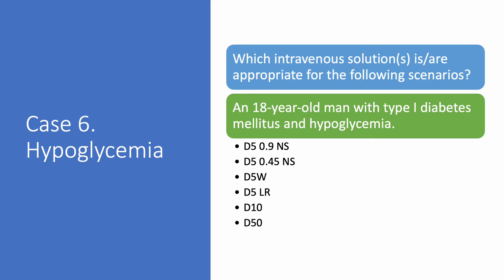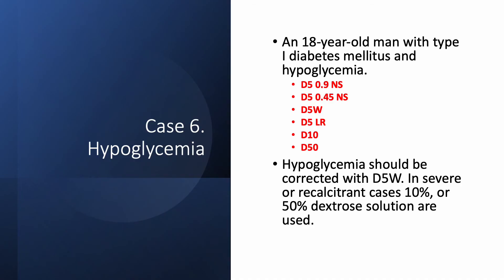Case number six: an 18-year-old man with type 1 diabetes mellitus and hypoglycemia. You can use any solution that has dextrose: D5/0.9% saline, D5 half normal saline, D5W, D5LR, D10, or D50. Most of the time you will use D5W, and if the hypoglycemia is severe you will use D10 or even D50. Use D5/0.9% saline if the patient is hyponatremic. If the patient is hypotensive, you might use D5/0.9% or D5LR. The bottom line is you want to use dextrose.